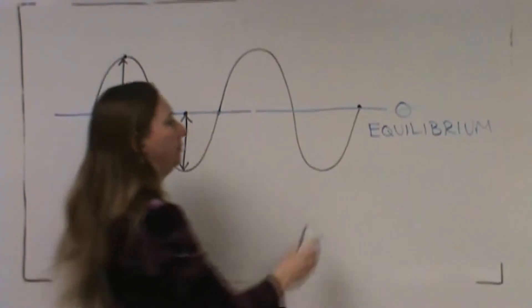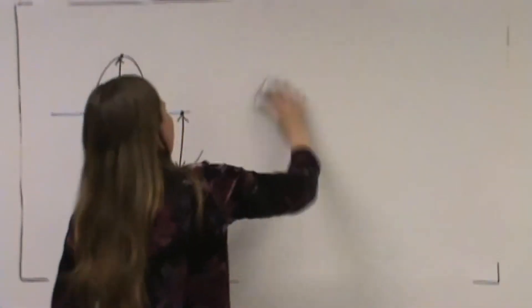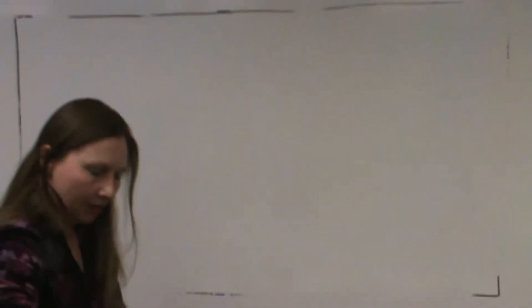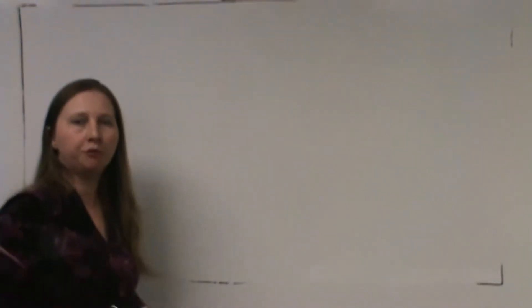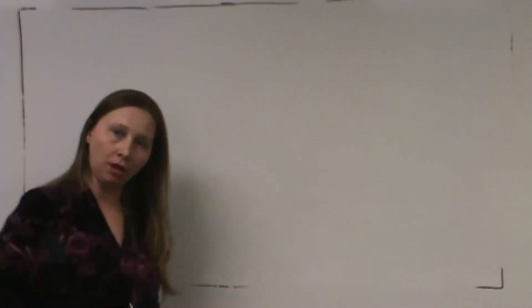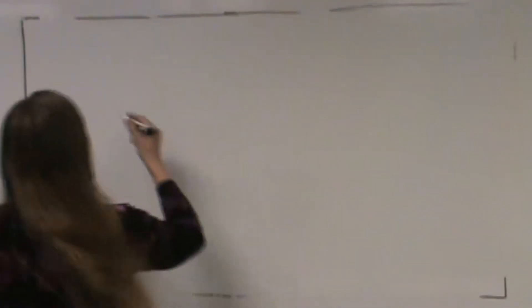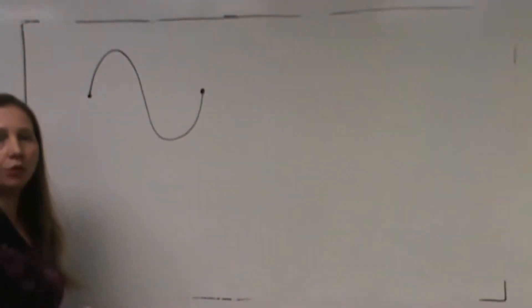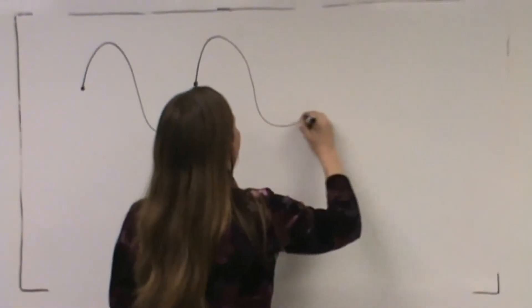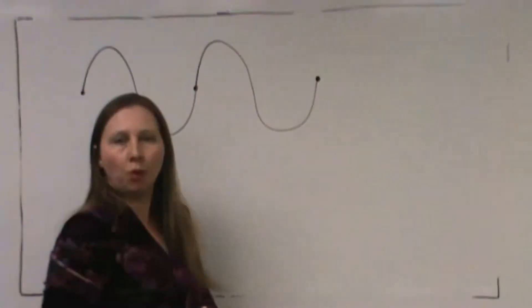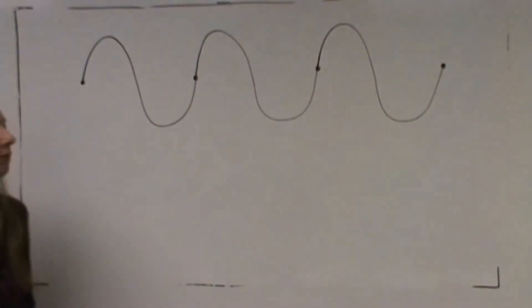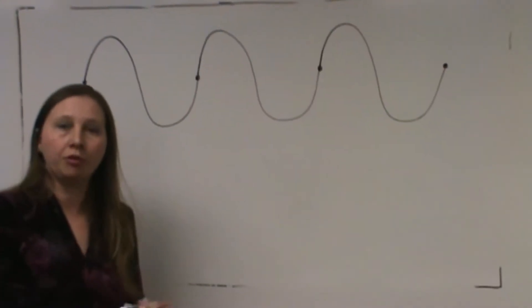How about frequency? I'm going to draw a wave with a certain frequency and then draw a second wave with double the frequency of the first wave. Here's my first wave: crest, trough — that's one wavelength or one cycle. Crest, trough — another wavelength, another cycle. Crest, trough. So I've drawn three cycles or three wavelengths.